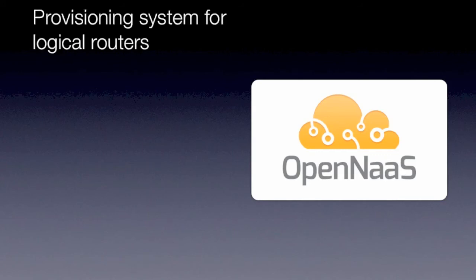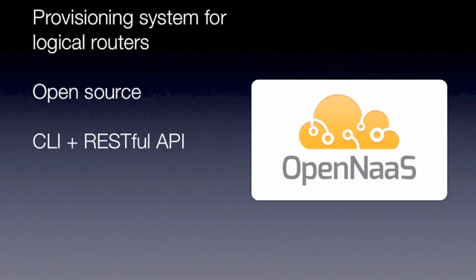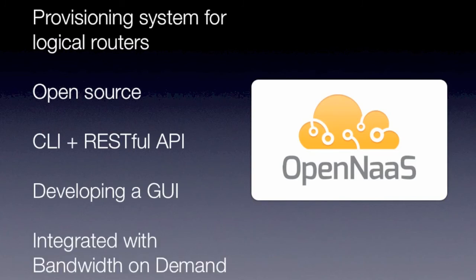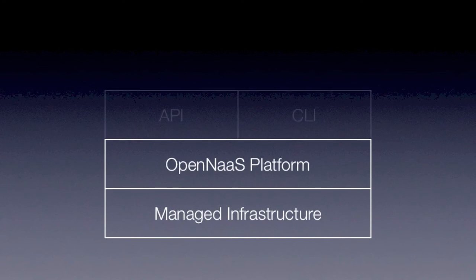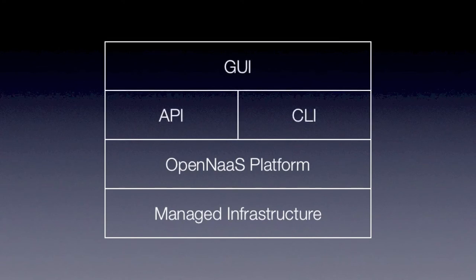What we have in the tool is a provisioning system for logical routers built from this framework. It's an open source framework with a command line interface as well as the GUI I just showed you, and best of all it's integrated with the Bandwidth on Demand network used inside GÉANT. This lets us take the physical infrastructure that we have and manage it using the OpenNAS platform, interacting with it through the CLI or through the GUI which is developed upon the API.